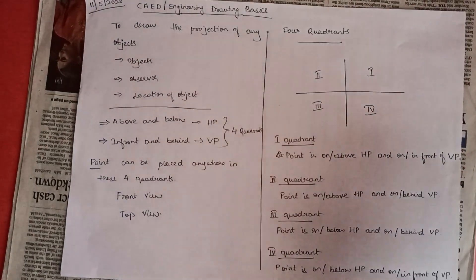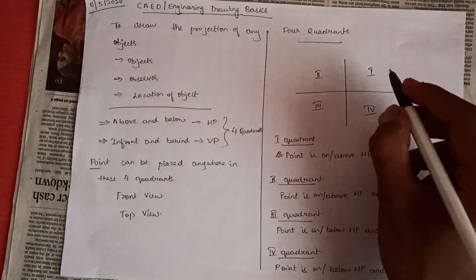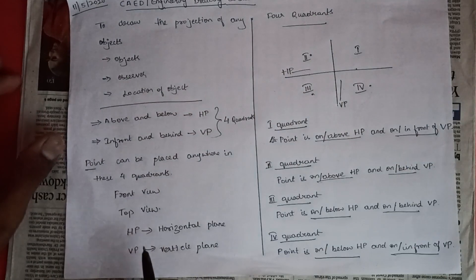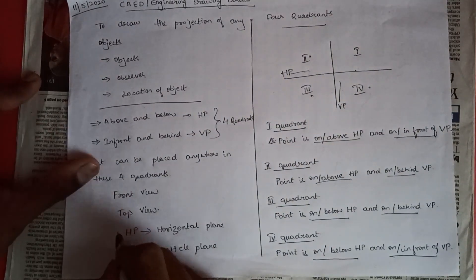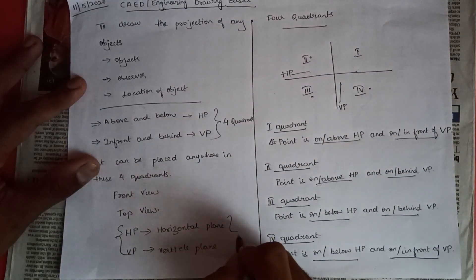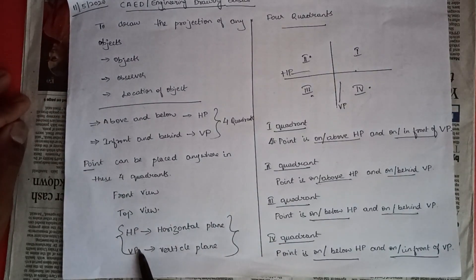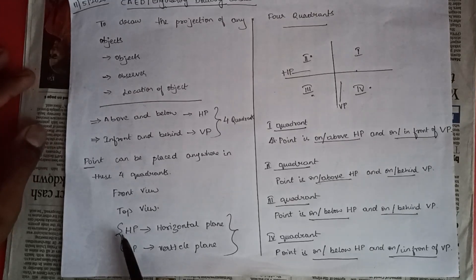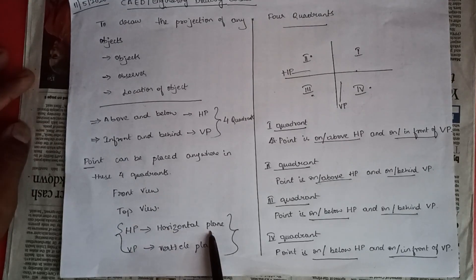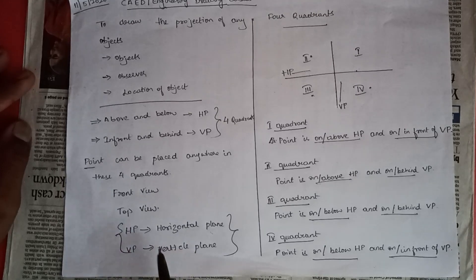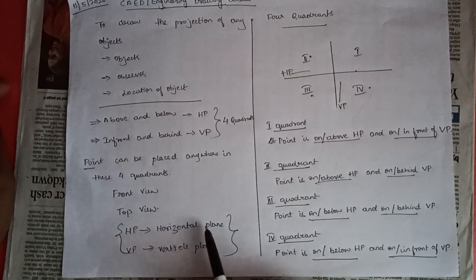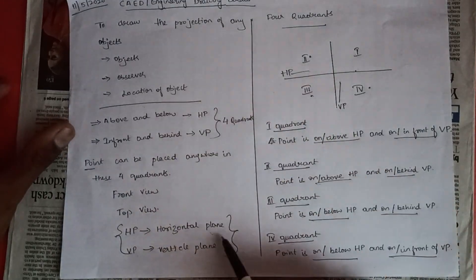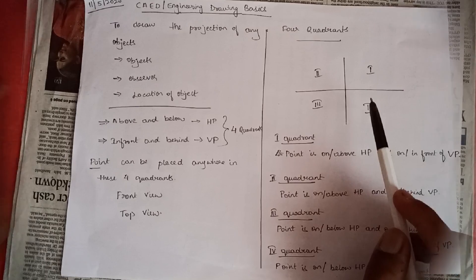Before we see the four quadrants, let's understand what HP and VP are — these come up in every problem and concept in CAD or engineering drawing. HP is the horizontal plane and VP is the vertical plane. To make it simple, you can think of HP as the x-axis and VP as the y-axis.